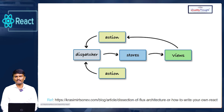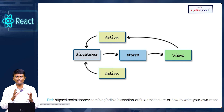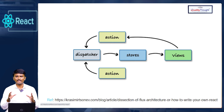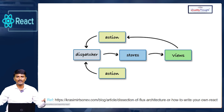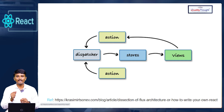The Flux Architecture is about managing data efficiently. The key idea is that data has a single point — a store. We push data into the store from the application, and data is distributed from that single point throughout the application. This is Flux Architecture. We will see in detail how to implement Flux as we develop applications in React.